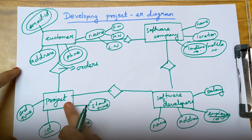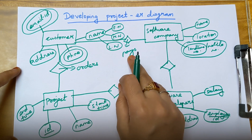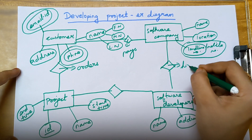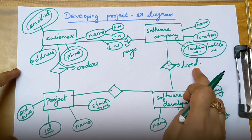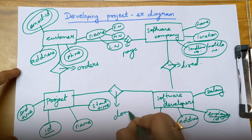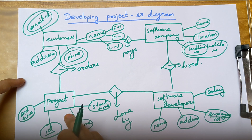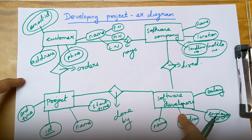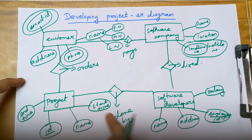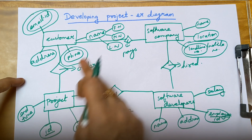Next, for the customer and software company, I write pays inside this diamond box — the customer pays to the software company. Next, inside another diamond box, I write hired — the software company has hired the software developers. Next, for project and software developer, I write done by inside this diamond box. So the flow goes like this: the customer will order the project; the project will be done by the developers in the company; the company has hired these developers; and finally the customer pays the software company for completing and delivering the project.